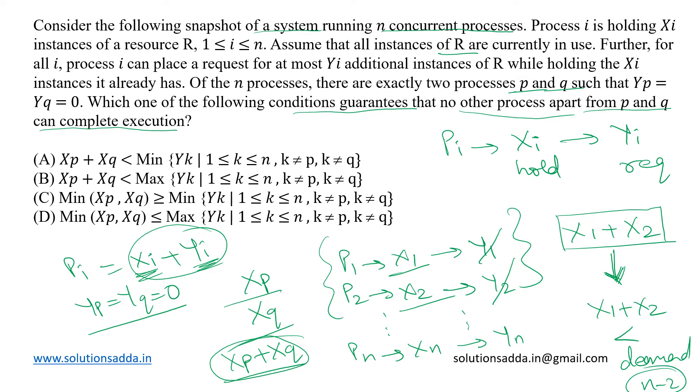Which means for all I ranging from 1 to N except these P and Q, these X1 plus X2 value must be less than any YI. So we can see that in the option A that XP plus XQ means the released resources must be less than the minimum requirement of any of these K processes such that K is not equal to P and K is not equal to Q. That simply implies that for all the processes except these P and Q, the released resources must be less than any of their requirement.